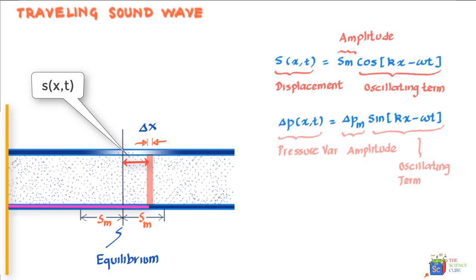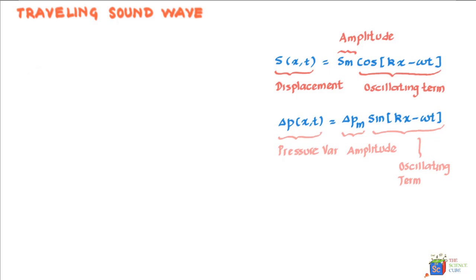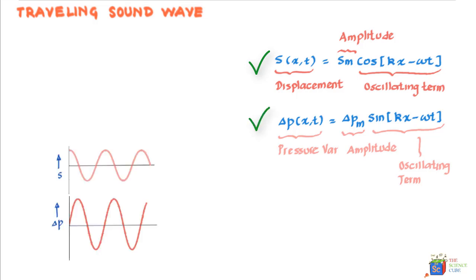So if we graph this equation, what you can see is that the pressure difference is either a maxima or a minima. So let's put the two graphs, one for this equation and the other for this equation. What we have here is this graph representing the displacement of the particle about its mean position and this the change in pressure at any position x.